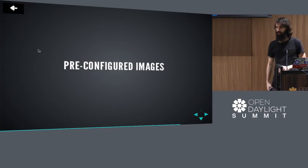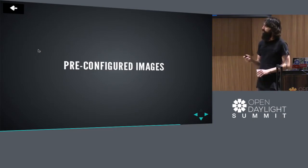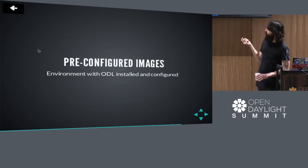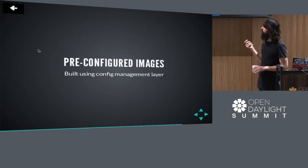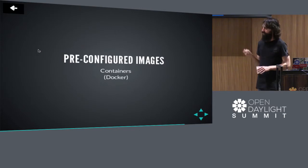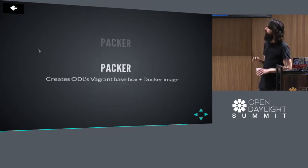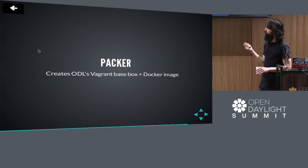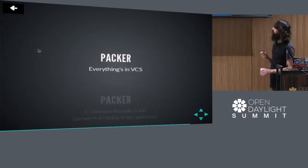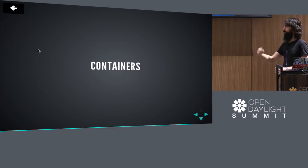Final part of the stack — the pre-configured images. These are OpenDaylight already installed using the tools we talked about. They're Vagrant base boxes and Docker containers, built using a tool called Packer. Everything's in version control. It lives under integration packaging. It uses Ansible, so when we make Ansible updates, we get those for free in Packer.